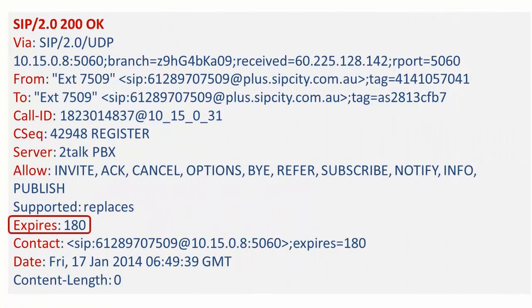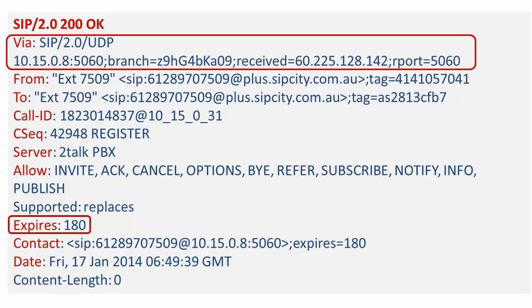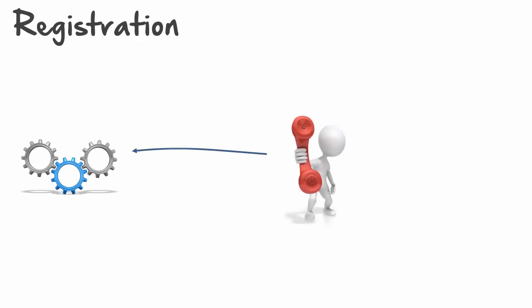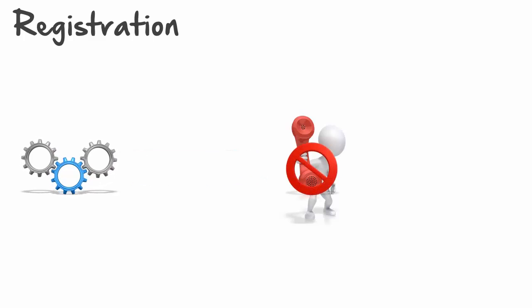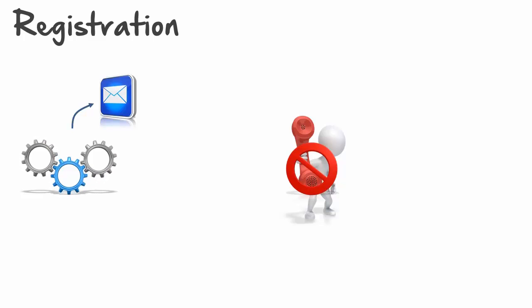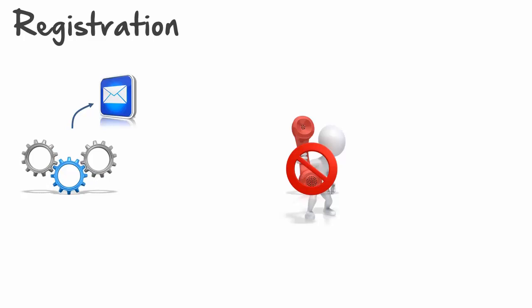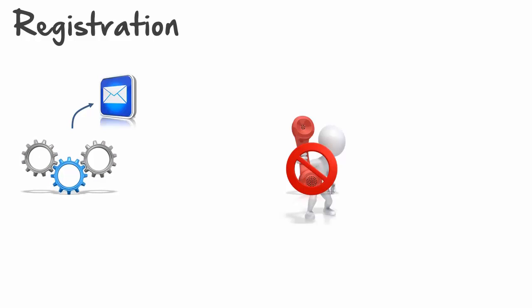I think of registration like a game of ping pong. The phone sends its registration attempt; we in turn send an options packet to validate the phone's port and address details. If for whatever reason the phone goes offline or becomes unavailable, we'll fail the call over to voicemail until we see the next register come through. This is one of the reasons why we recommend reducing the keepalive interval from the default 3600 seconds down to 180, as you don't want to be waiting an hour for the phones to attempt the next registration if something goes amiss on your side.